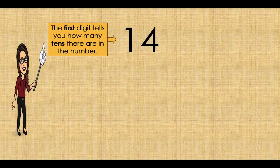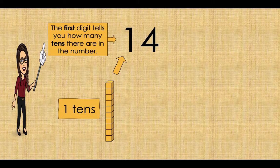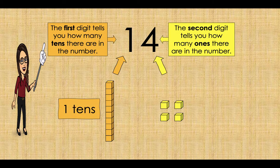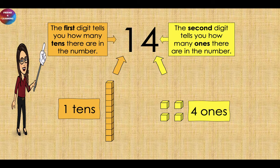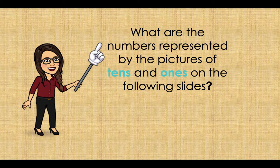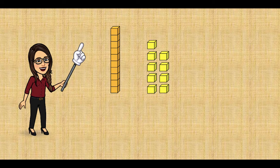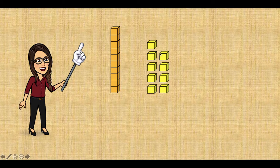Look at this next example. Can you guess how many tens there are? Bravo — there is just one ten and four ones. Now look at this: can you guess what number it is? Well done, we have one ten and one, two, three, four, five, six, seven, eight, nine ones — so the answer is nineteen.